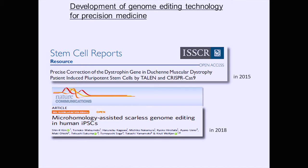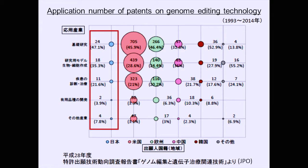We are able to identify and change multiple sites considered to be causes of problems — including work on muscular dystrophy. Compared with the rest of the world, Japan is currently lagging behind. In a survey from the 28th year of Heisei, we found we were behind the UK, Europe, China, and South Korea, and we need to do something to tackle this.